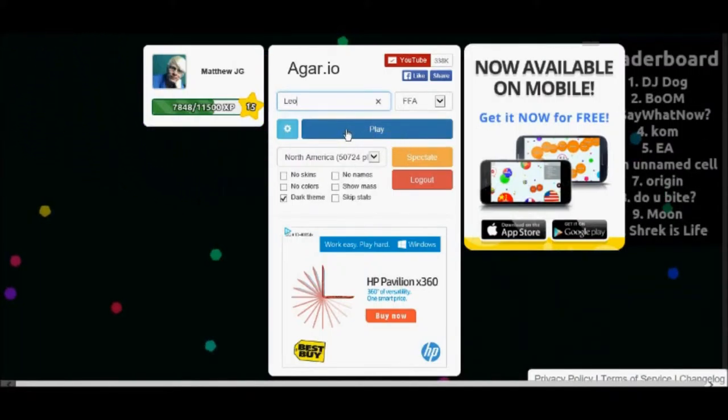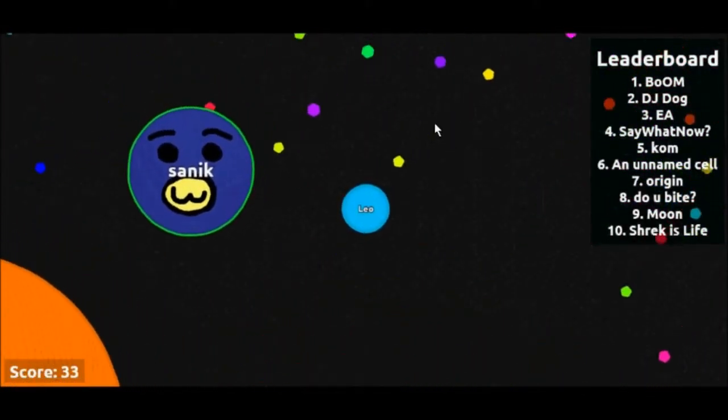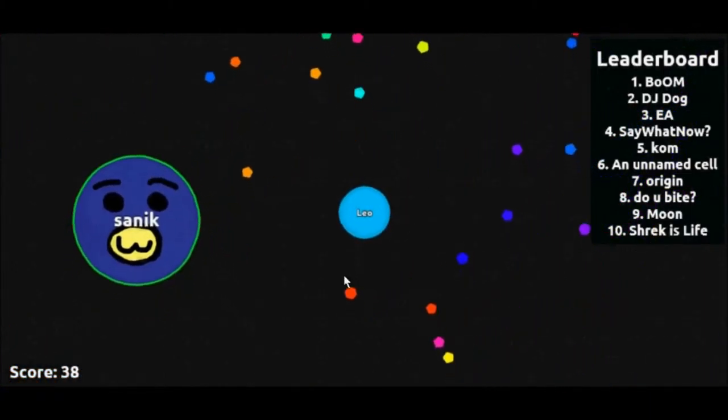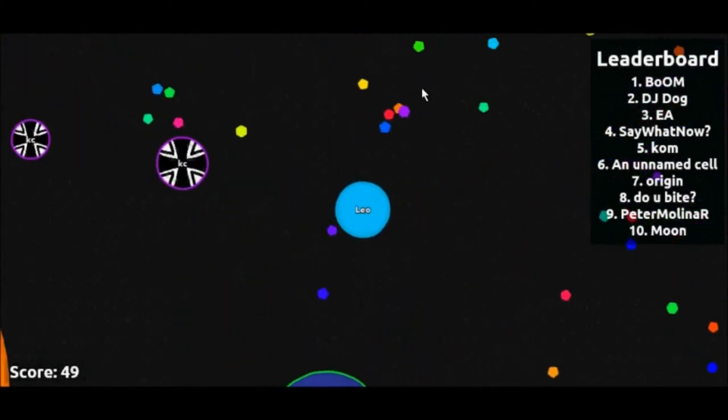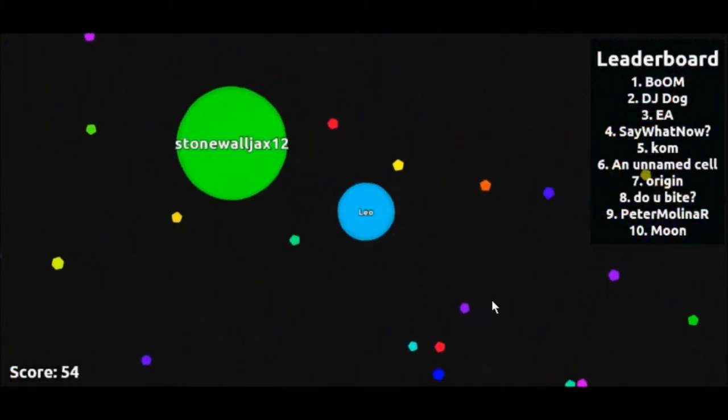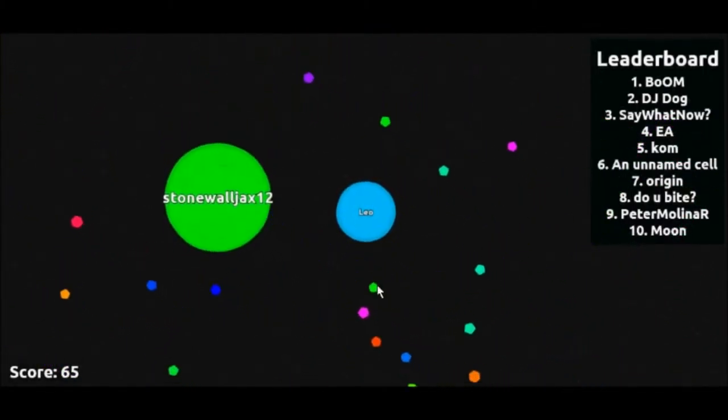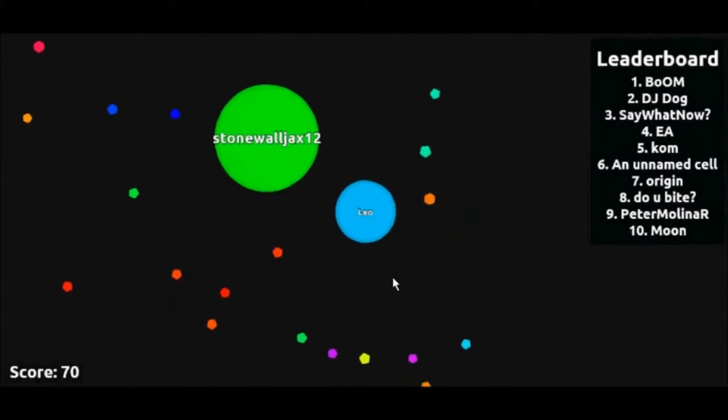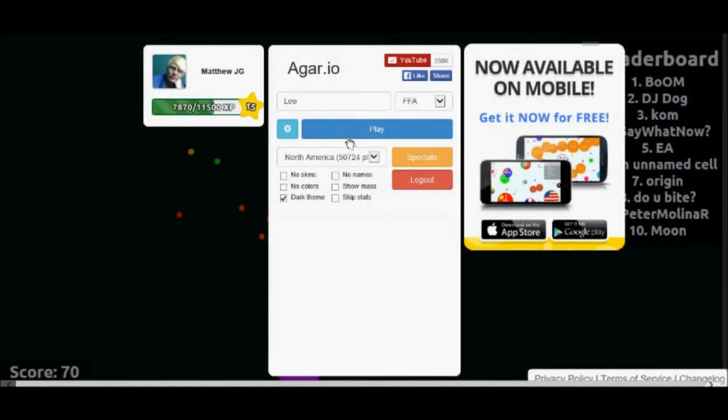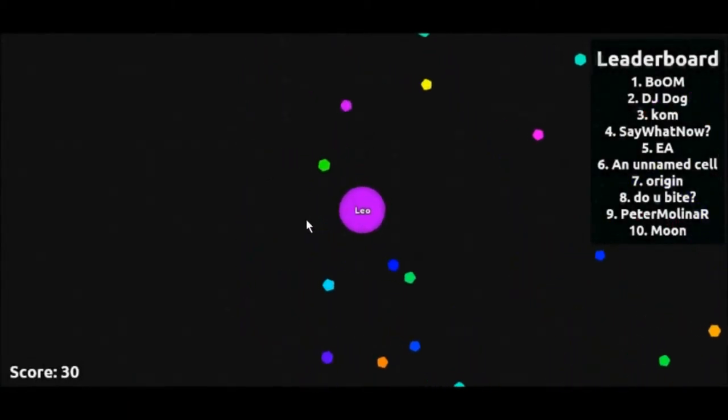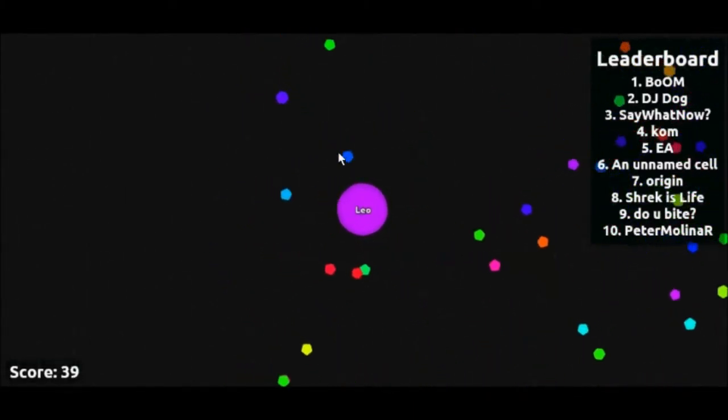3, 2, 1, play. Alright, so we're blue ball. And a quick shout out to my girlfriend Angel for introducing me to this game. Oh, yikes. Alright, so the goal of this game is to eat smaller dots to become bigger dots. And then when you're a bigger dot, you can eat the smaller dots that were once big to you when you were small. Just eat dots and get bigger. That's basically it.